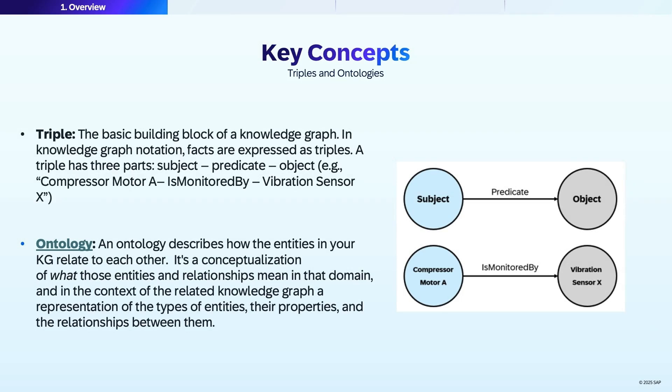In a knowledge graph notation, facts are expressed as triples. A triple has three parts: subject, predicate, and object. For example, compressor motor A is monitored by vibration sensor X.